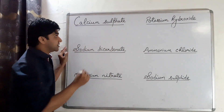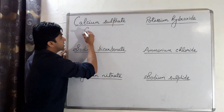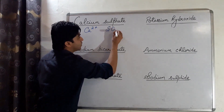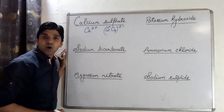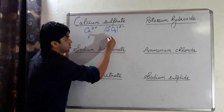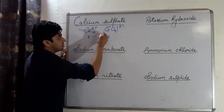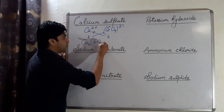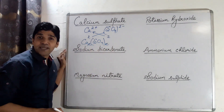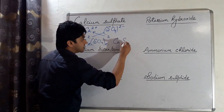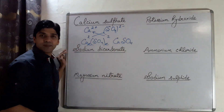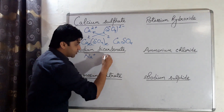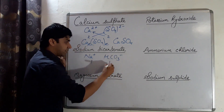What is the chemical formula of calcium sulphate? SO₄ is a polyatomic ion with valency 2. Using criss-cross method, we get CaSO₄. The formula of calcium sulphate is CaSO₄. Next, for sodium bicarbonate, HCO₃ has a negative valency of 1, so the formula is NaHCO₃.